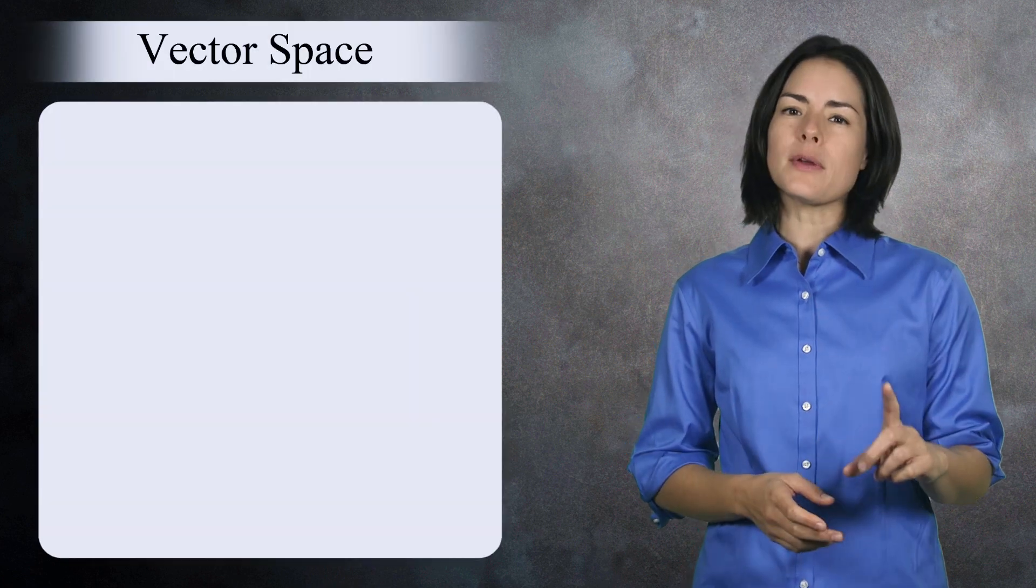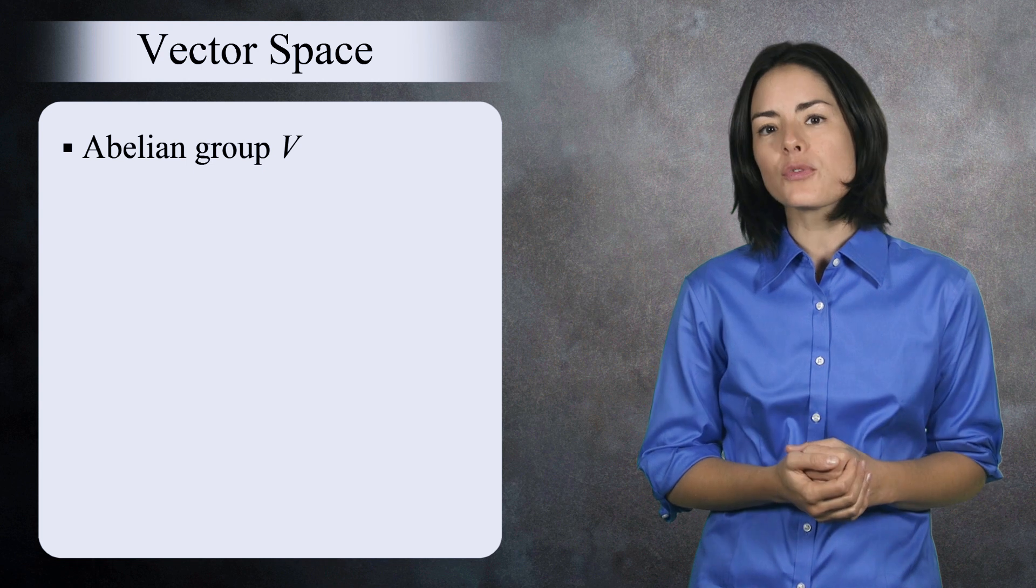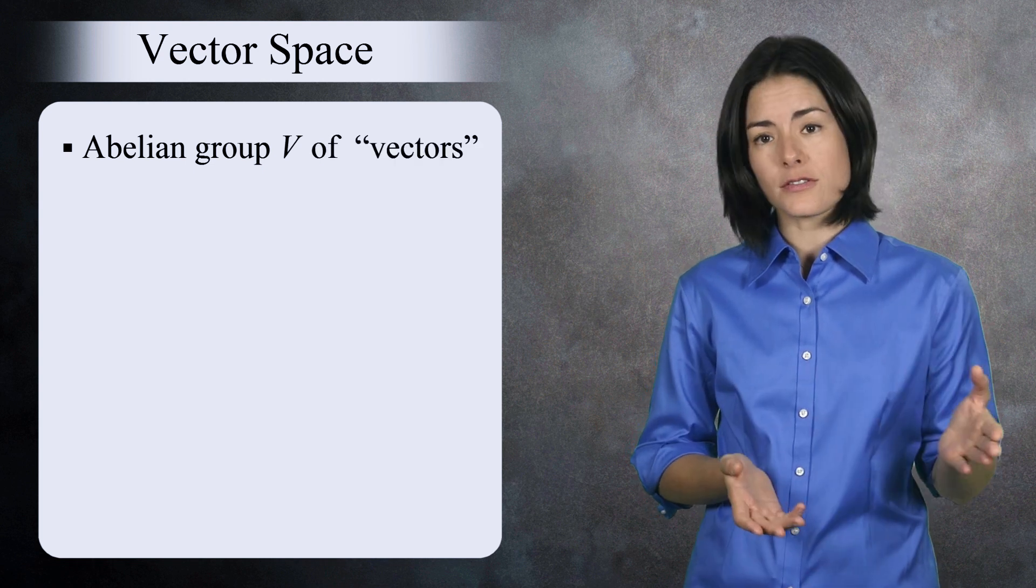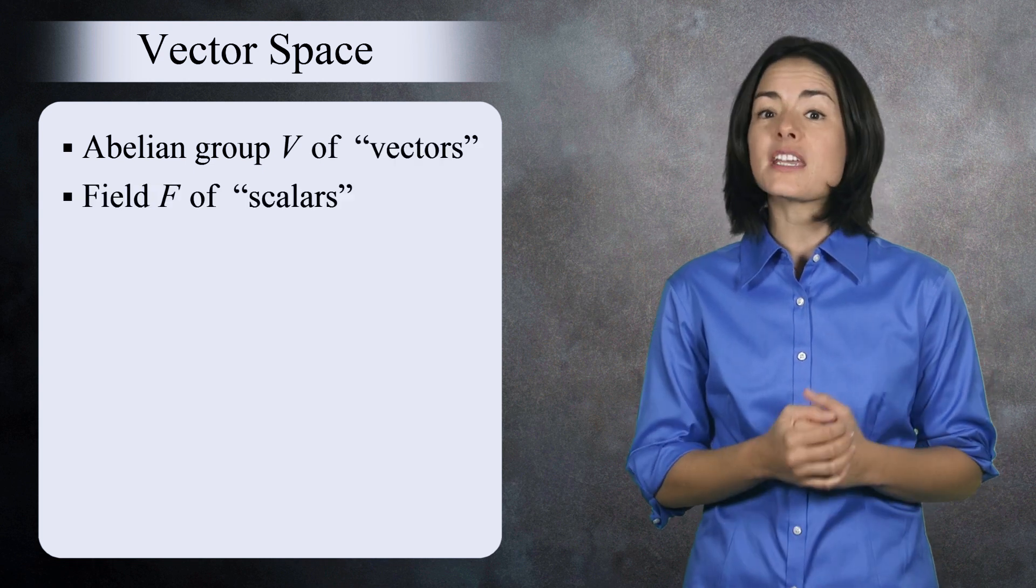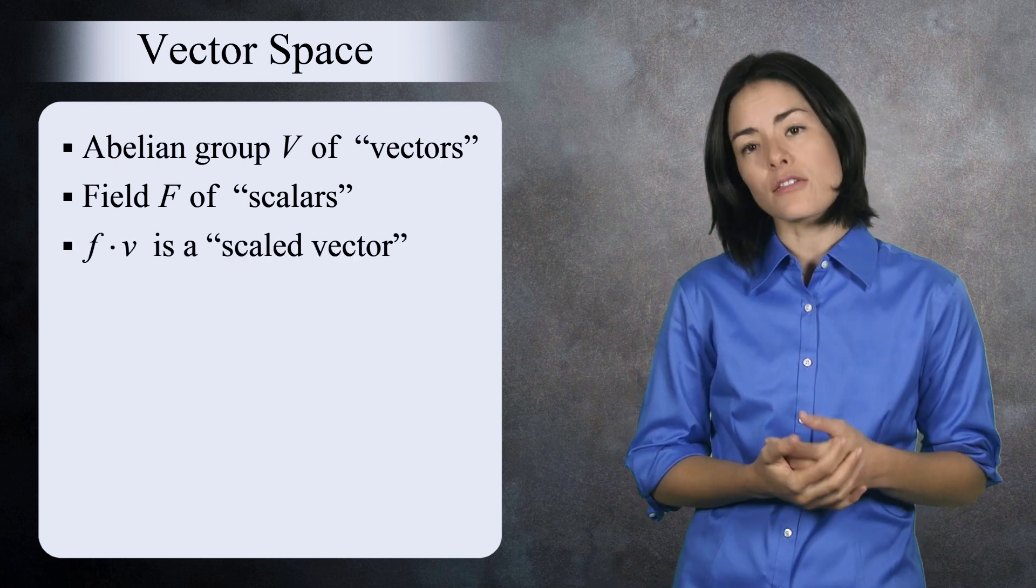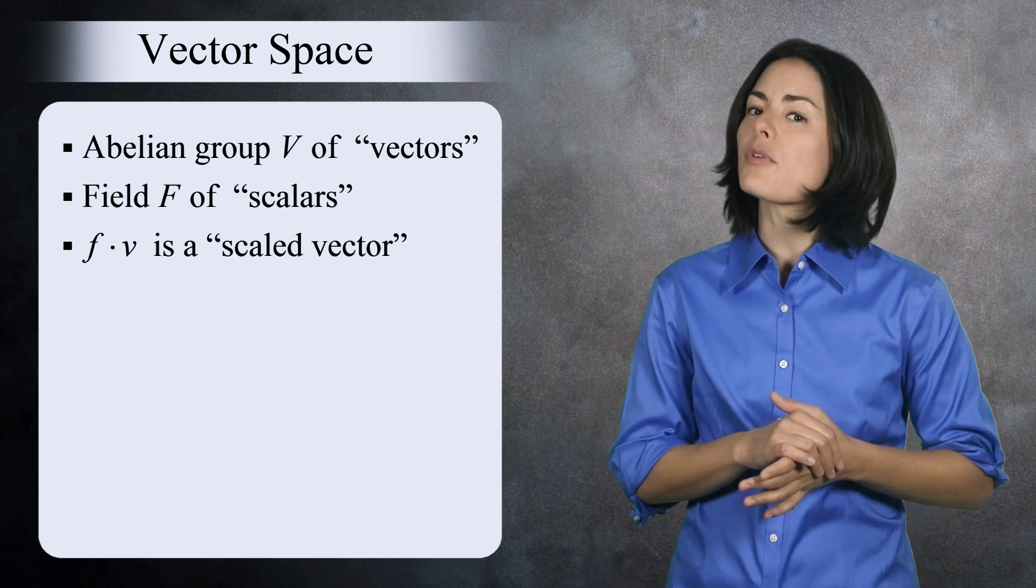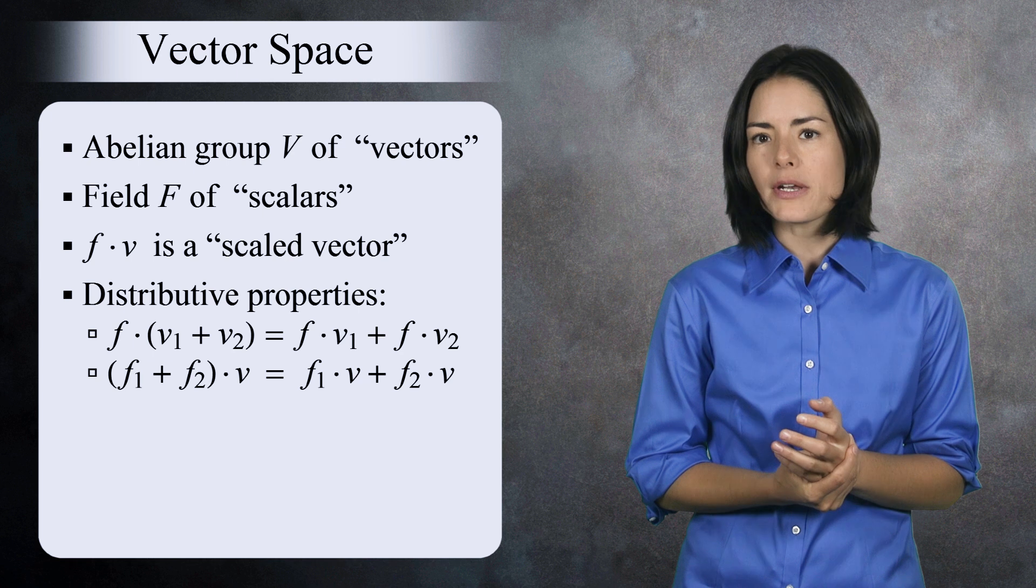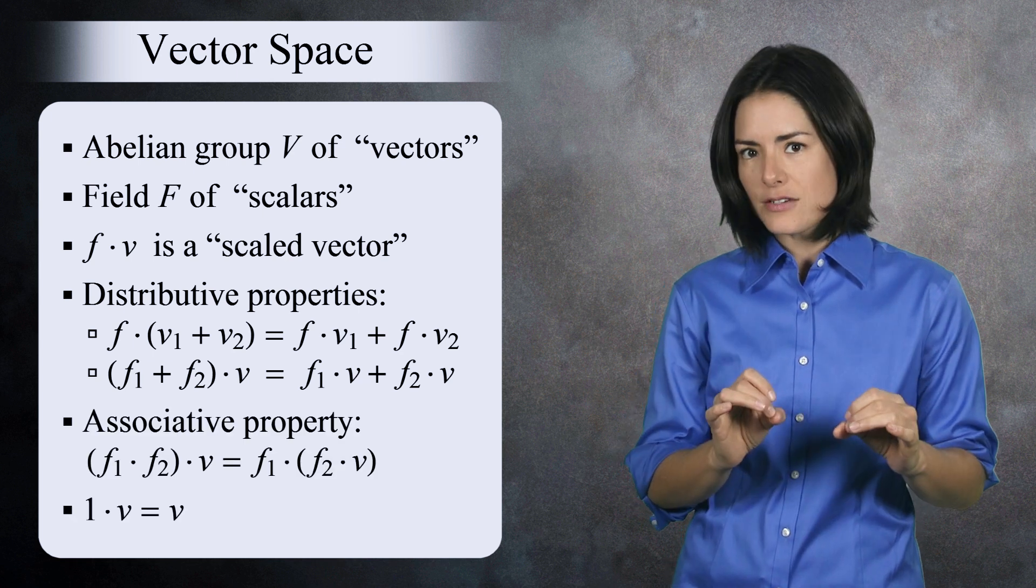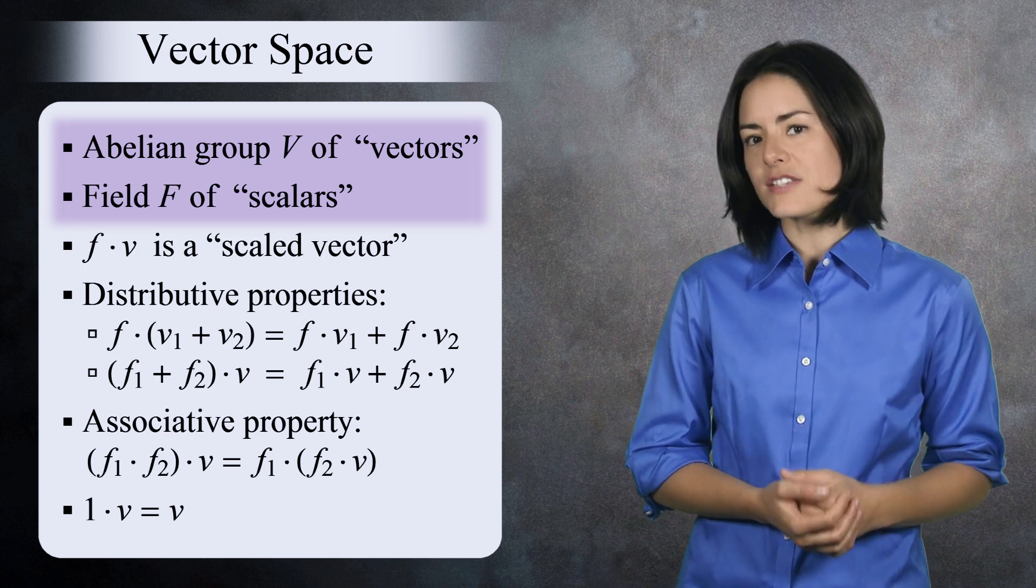The module is a generalization of a vector space. So before we jump into the definition of a module, let's take a moment and remind ourselves what a vector space is. It's an abelian group V, and we call the elements of this group vectors. It also comes with a field of scalars F. You have a group of vectors and a field of scalars.